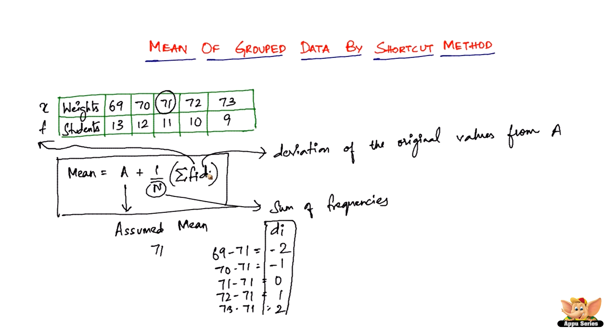Let me write this again clearly. Mean by shortcut method is given by assumed mean plus 1 by capital N times summation FI DI. So here we have the formula.